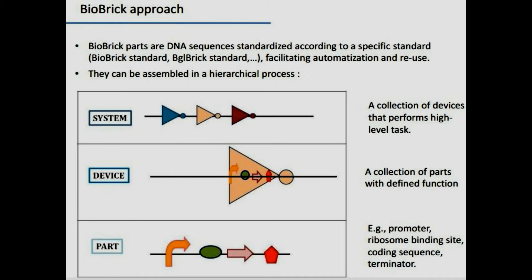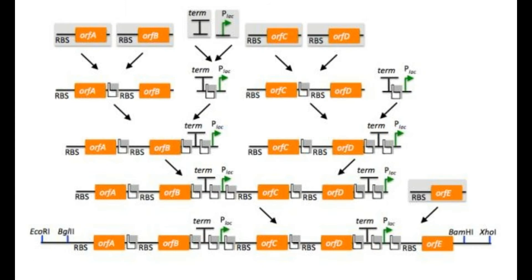The BioBrick part is carried on a plasmid and is flanked by two restriction sites at each side. The two nearest restriction sites have a compatible overhang after digestion, and after the restriction and ligation steps, the new BioBrick part is flanked with the same restriction sites. So it is idempotent and a six base pair scar is created in the middle. In the newly created BioBrick, the four restriction sites are only present once, so for assembly at the other side, some other enzyme can be used.